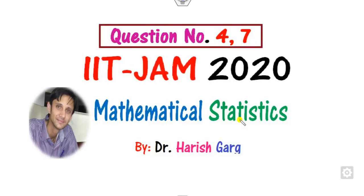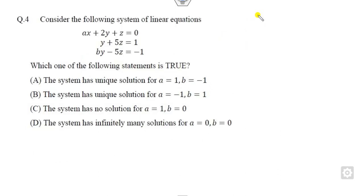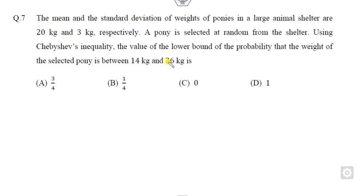Hello students, welcome to the previous year mathematical statistics paper related to IIT Jam 2020. In this video we will see how you can solve question number 4 and question number 7 in a very simple manner. Question 4 is related to unique, no solution, or infinite many solutions, while question 7 is related to finding the lower bound of the probability. We will solve these two questions within a one-minute task.